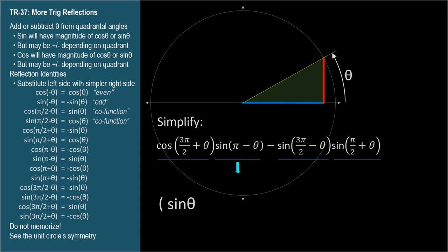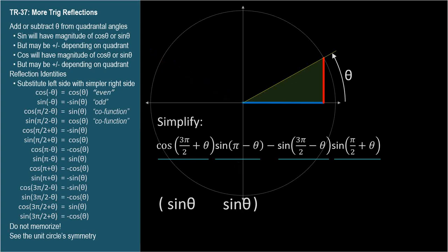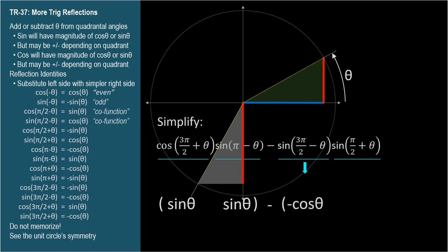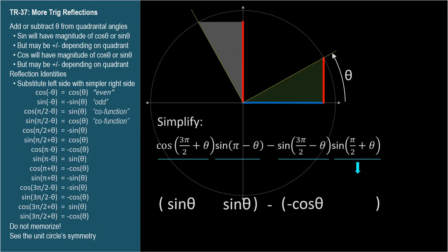The next term is sine of pi minus theta. Here's the angle and here's the sine — same as sine theta and same direction. So sine of pi minus theta equals sine theta. The next term: sine of 3 pi over 2 minus theta equals negative cosine theta. The last term: sine of pi over 2 plus theta is positive and the same as cosine theta, so sine of pi over 2 plus theta equals cosine theta.